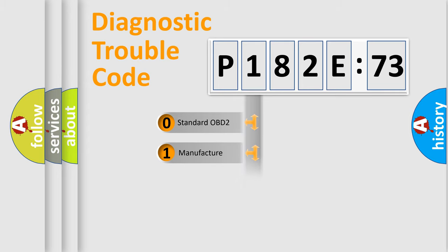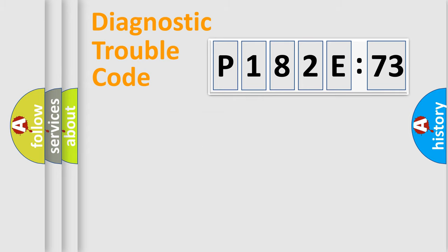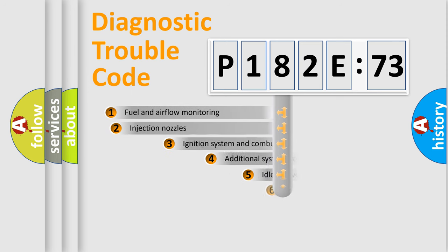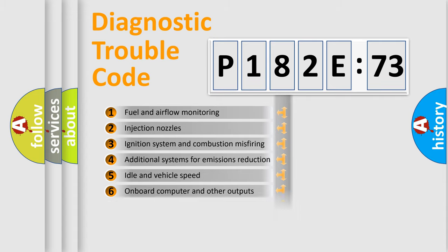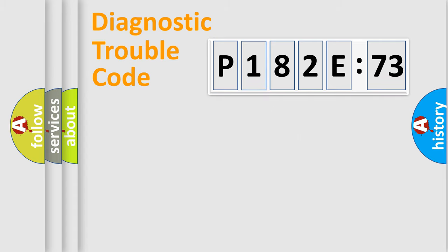Only the last two characters define the specific fault of the group. The add-on to the error code serves to specify the status in more detail. For example, a short to the ground. Let's not forget that such a division is valid only if the second character code is expressed by the number zero.